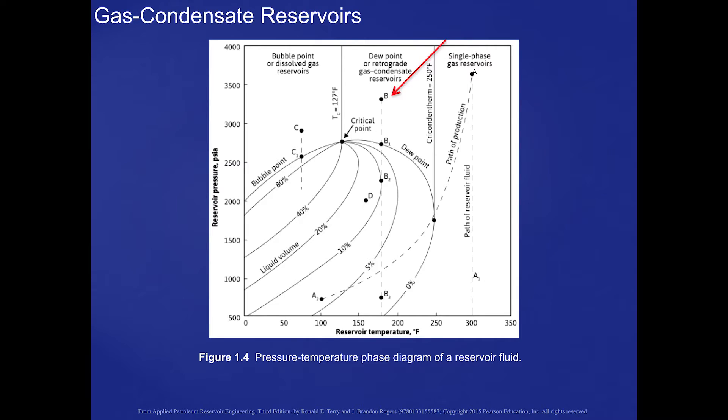And if you look at this slide, and remember the discussion that we had in Chapter 1 regarding the various hydrocarbon types, we are at a reservoir that would be with an initial pressure and temperature given by point B on this diagram.